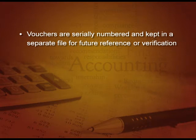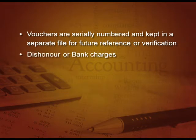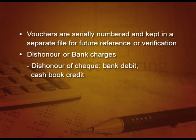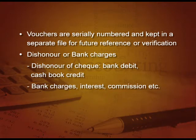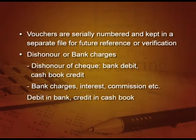These vouchers are serially numbered and kept in a separate file for future reference and verification. Let us also think about dishonour of a cheque and bank charges. Dishonour of a cheque means the bank will debit and the cash book will credit — that is, it will be debited in the bank and in our cash book bank column it will be on the credit side. Similarly, bank charges, interest, commission, etc., charged by the bank will have the same effect — debited in the bank and credited in the cash book bank column.